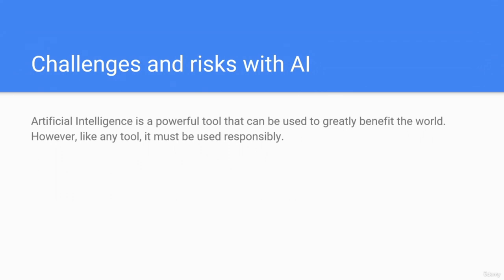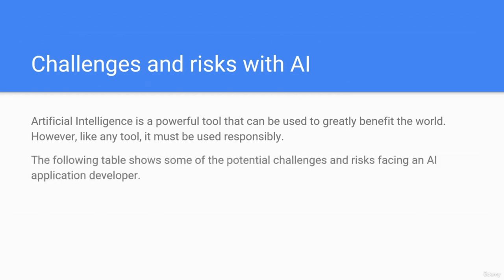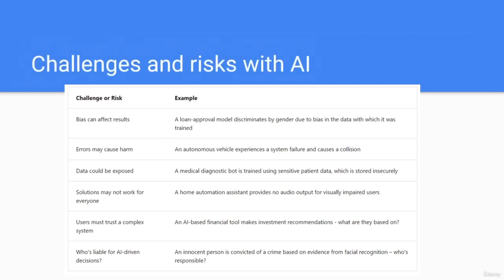Artificial intelligence is a powerful tool that can greatly benefit the world. However, like any tool, it must be used responsibly. Some potential challenges and risks facing an AI developer include bias affecting results — for example, a loan approval model that discriminates by gender due to bias in the training data.